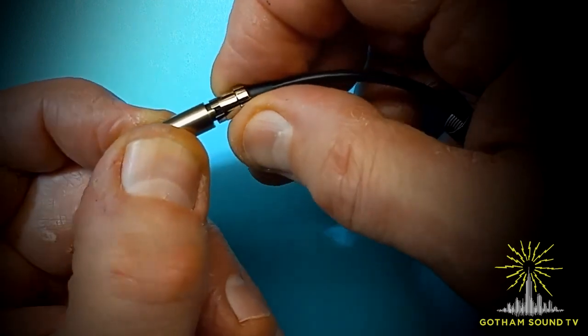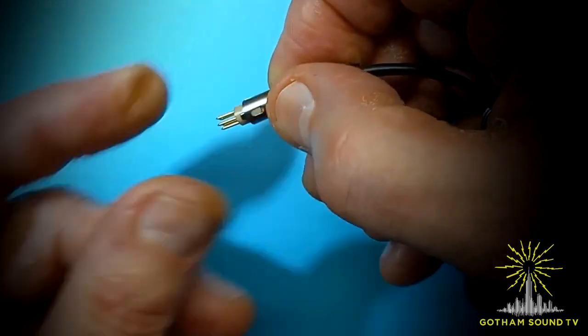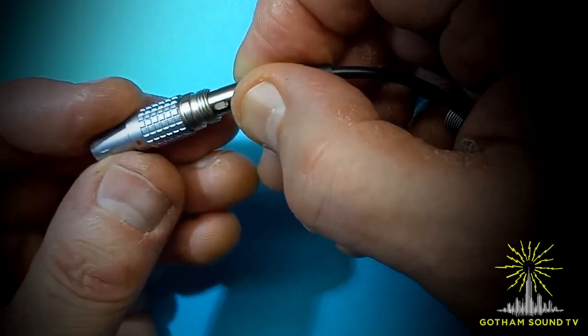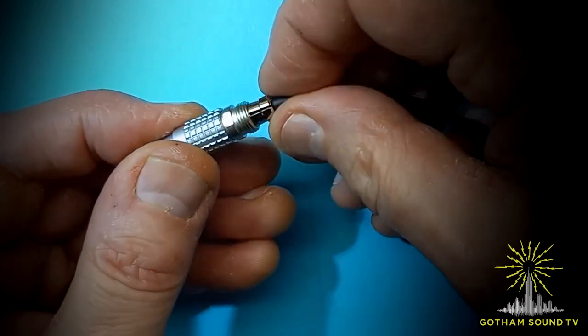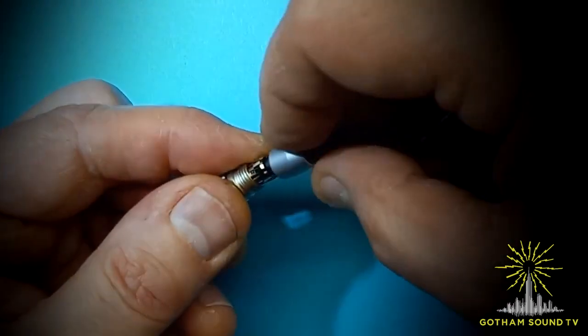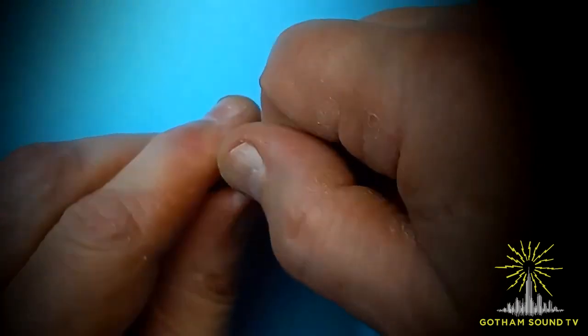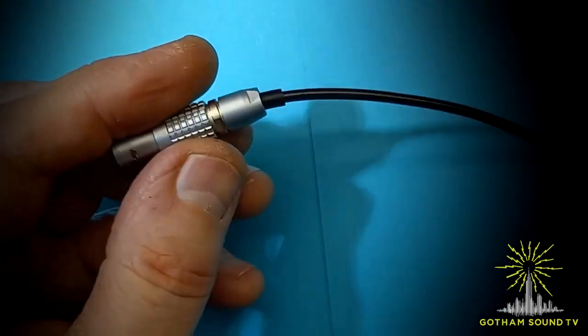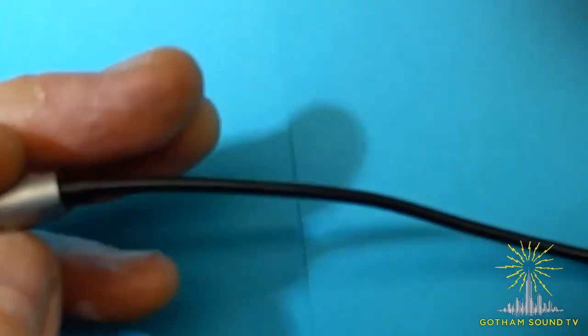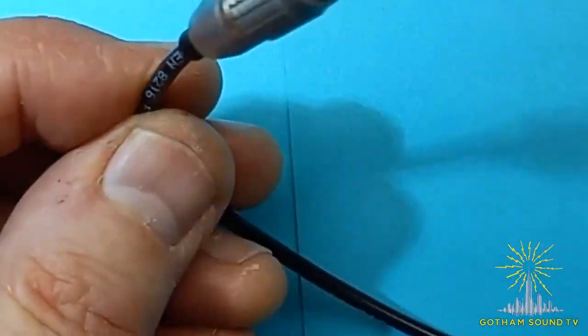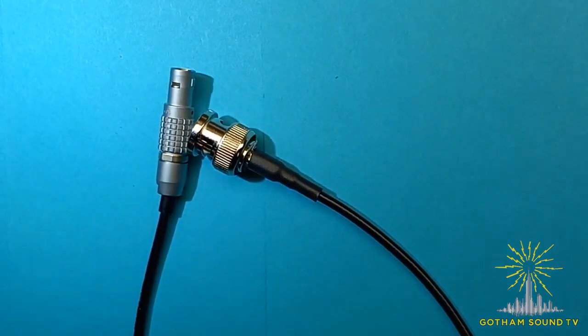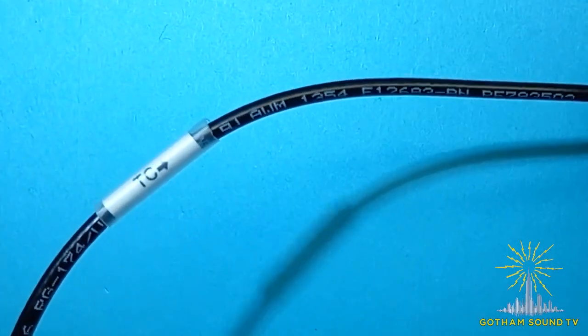Now it's the final assembly. Remove the Lemo connector, tightening the collet nut, and the cable is done. Don't forget to put the P-touch label to show the direction of the timecode.